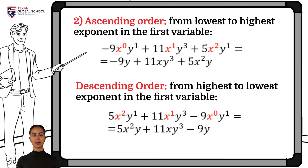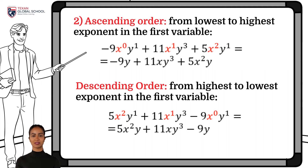In descending order, it is precisely the other way around. First comes the term with x squared, since it is the one with the highest degree. Then the term with x raised to the first power, and finally the term with x raised to the 0 power, or the term without x.